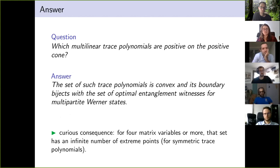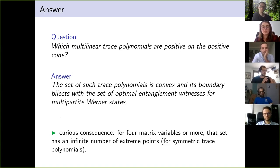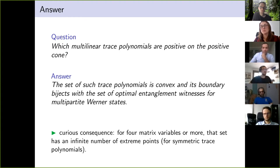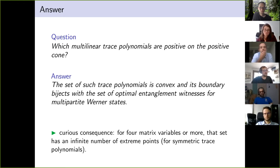I'll give you the answer now and show the tricks later. The set of multilinear trace polynomials positive on the positive cone is convex, and the boundary of that convex set bijects with the set of optimal entanglement witnesses for multipartite Werner states. Werner states are invariant under conjugate twirling: you multiply U^{⊗n} on both sides and the state stays invariant. As a funny consequence, for four or more matrix variables this set of such Werner polynomials has an infinite number of extreme points when you look at symmetric trace polynomials.